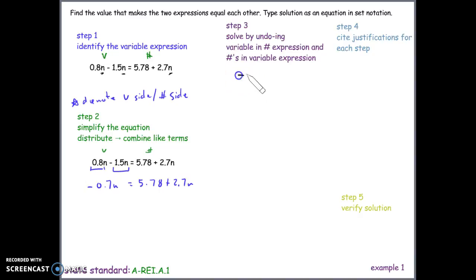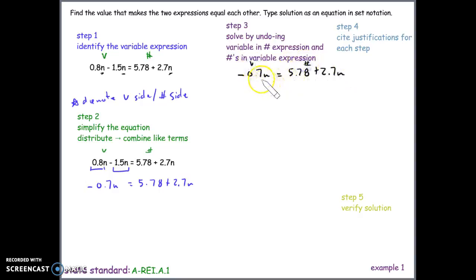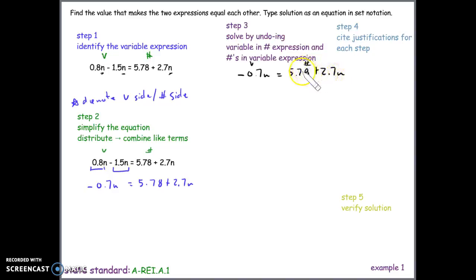We have negative 0.7n equals 5.78 plus 2.7n. The left side is our variable side and the right is our number side. We start by eliminating the variable from the number side. The 2.7n is being added, so we do the inverse and subtract 2.7n from both sides.